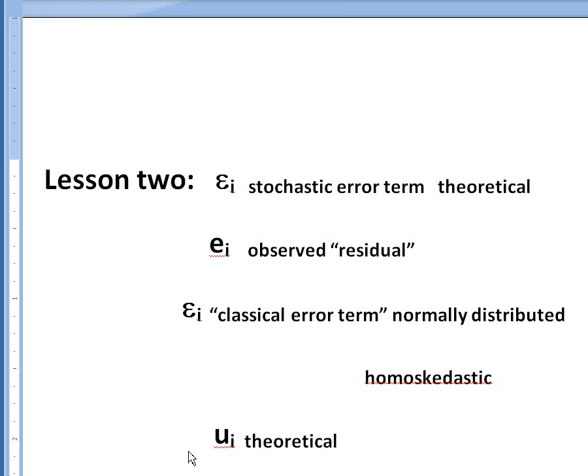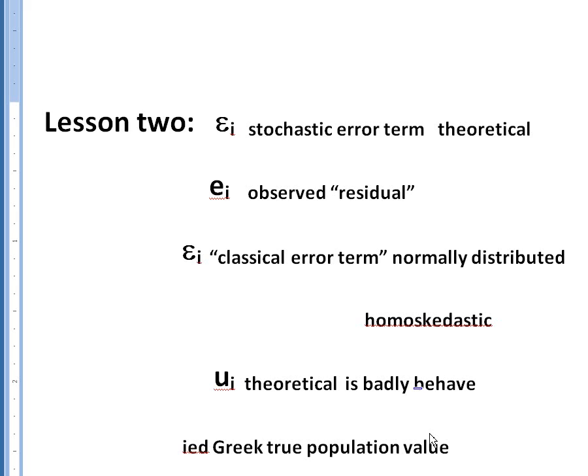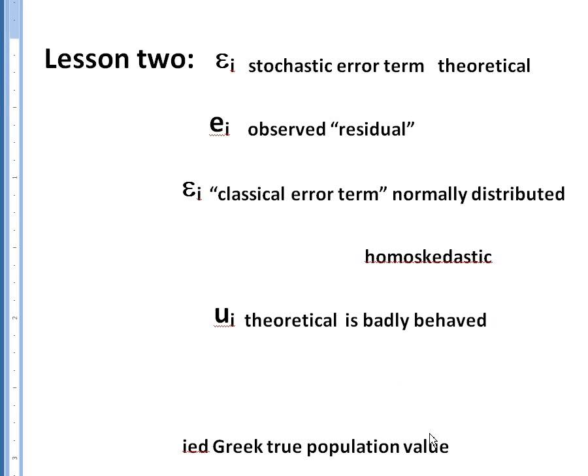Sometimes people will use this epsilon when they want you to think about a nice error term that meets all these assumptions that we want it to meet. And then if somebody throws out a u, this is not always the case but this is where I see it most often, if somebody throws out a u what they mean is they're talking about a theoretical error term that for some reason is badly behaved. I'm using this badly behaved in a general sense. You may be talking about an error term that has heteroscedasticity, you may be talking about an error term that's not really an error term. This error term might have something else that we know about it that's kind of weird.